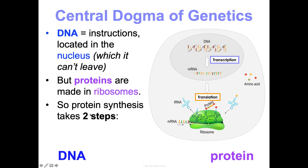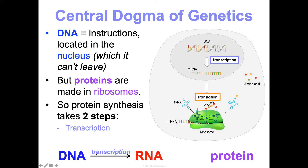Protein synthesis takes two large steps. First is transcription — to transcribe means to make a copy, like getting a transcript of your grades. We're going to copy the DNA and transcribe it into RNA. RNA is a single strand and a much smaller molecule than DNA, so it's small enough to leave the nucleus and go to the ribosome. Then we translate it — we translate the nucleic acid language into protein language. The central dogma is: DNA to RNA to protein.